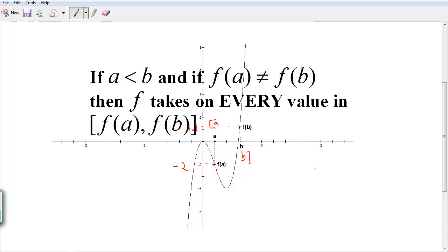So what the theorem is saying is that if you've got a function that's continuous first of all, and you get f(a) is in this case negative 2 and f(b) is 1.1, then the theorem is saying the function is going to take on every value between negative 2 and 1.